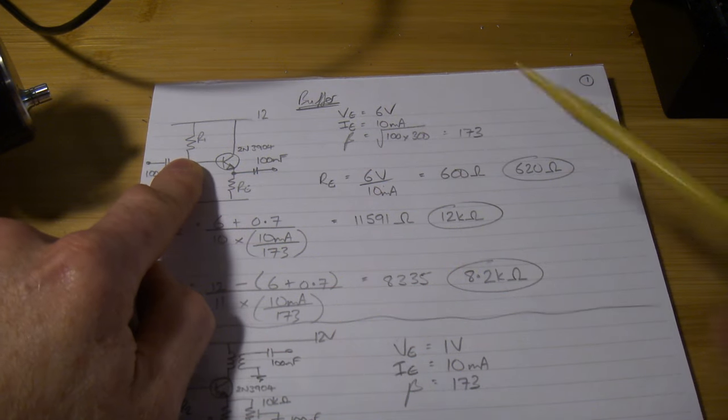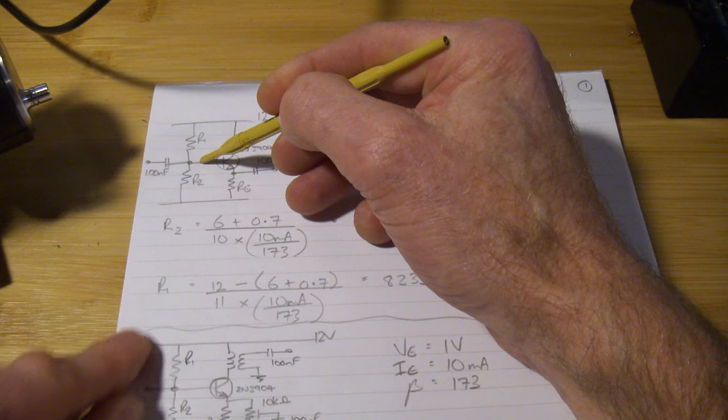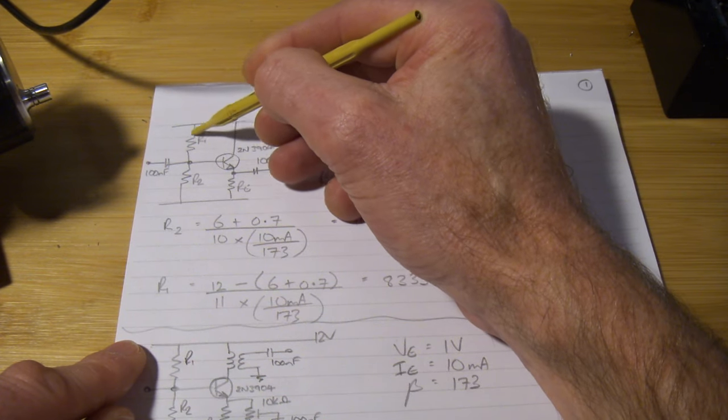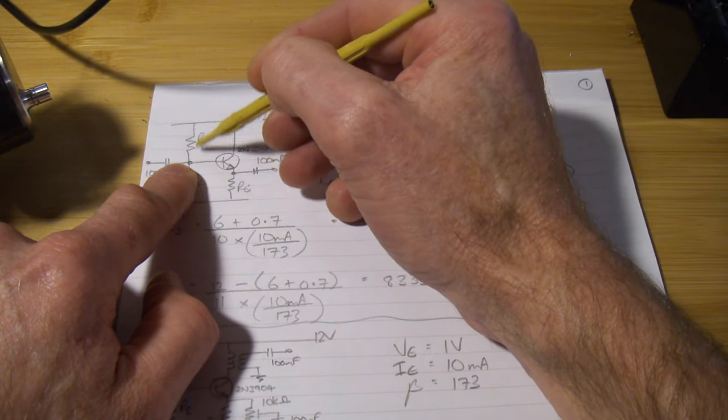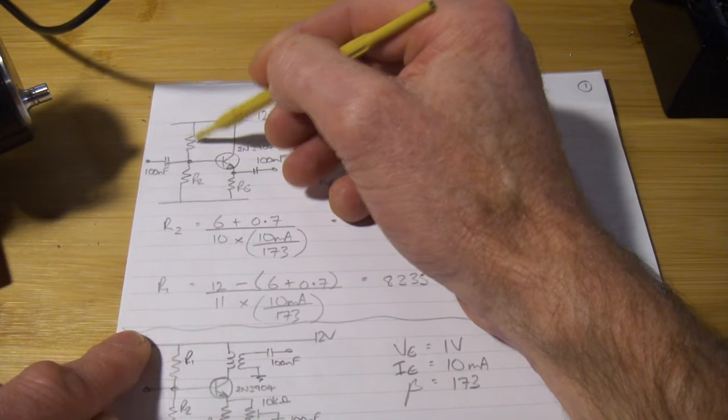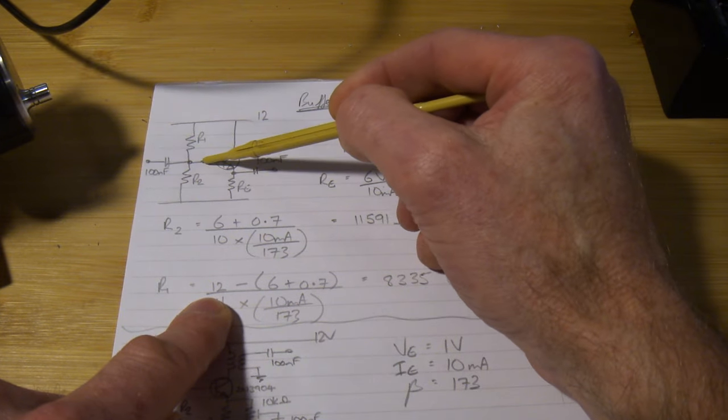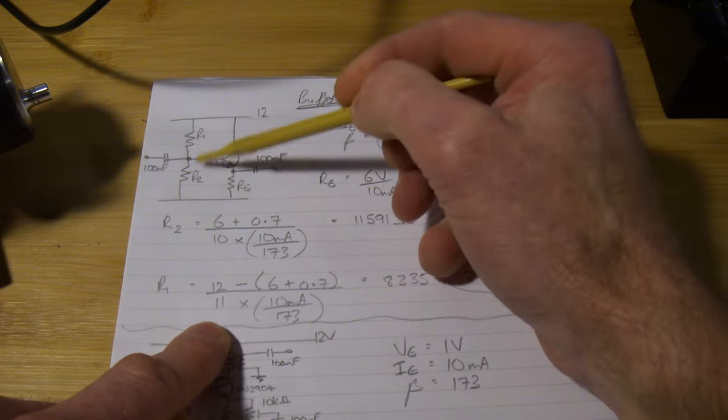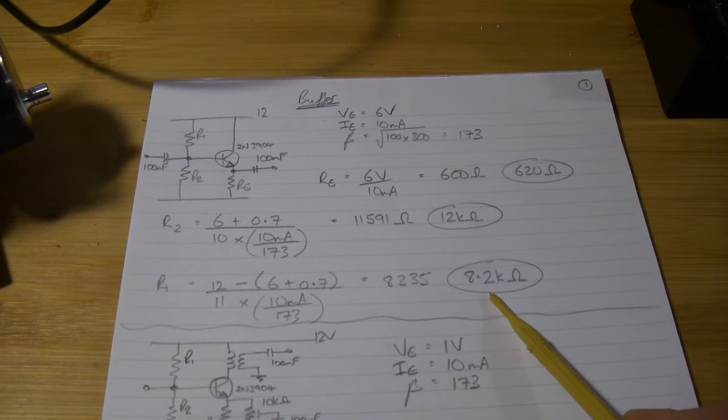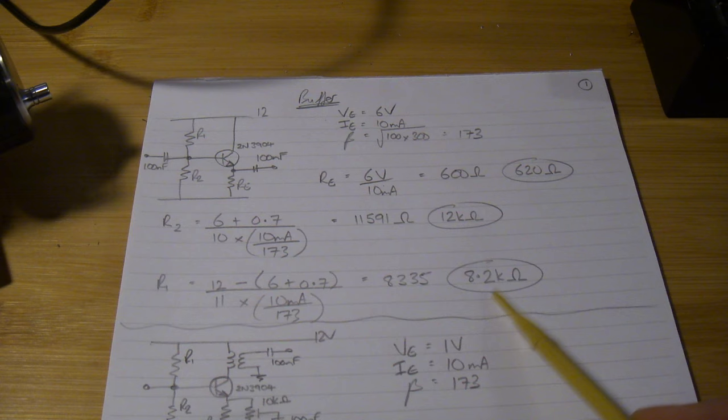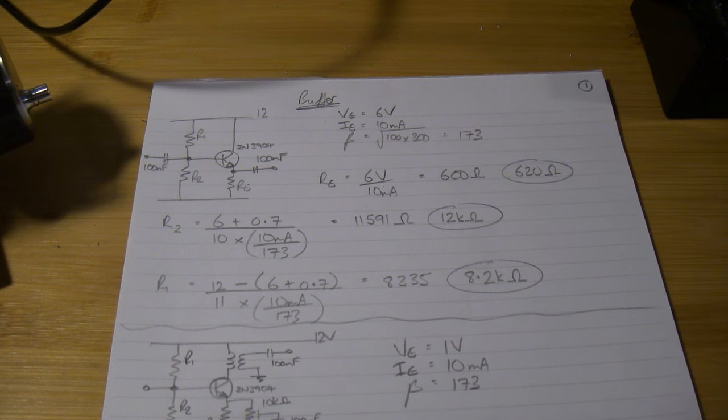So in this particular case, 6 plus 0.7 divided by 10 times the base current, so 10 mA divided by beta DC, comes out 11591 ohms, so I'll use 12k ohms as the nearest standard value. R1, the top resistor there, I use electron flow, so currents flowing out from earth, through that forward bias junction, can't go through that diode there, so it flows up to 12 volts. There's already 10 times going through there, so plus another 1 times, makes 11 times the base current flowing through that top resistor. So therefore R1 equals 12 volts minus 6.7, divided by 11 times the base current. Comes out at 8335, so I'm going to use 8.2k ohms. And that's it, that's the three I'll use, and I'll plug that into LTSpice to see how that performs.